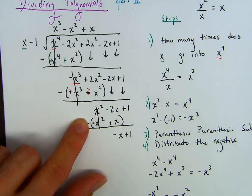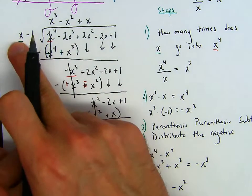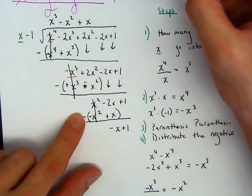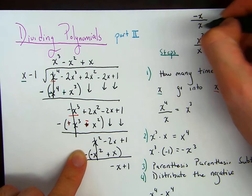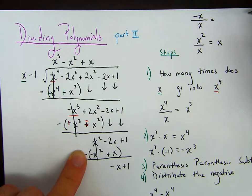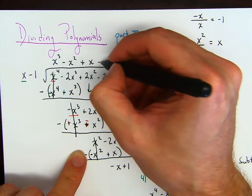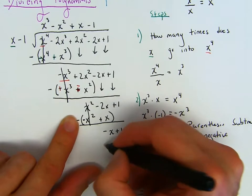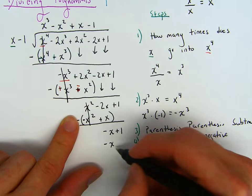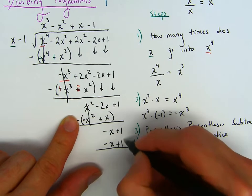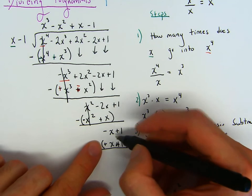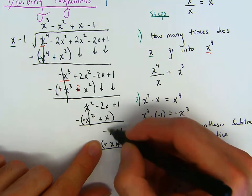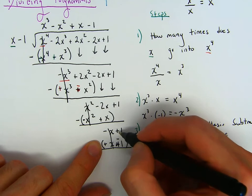Final one — how many times does x go into negative x? Pause the video. This would be negative 1. So this goes in negative 1 times. Negative 1 times x is negative x. Negative 1 times negative 1 is positive 1. Parentheses, parentheses, subtract. Distribute the negative — this is positive, this is negative. Negative x plus x cancels. Positive 1 minus 1 is just 0.